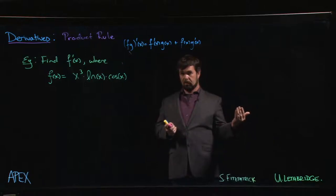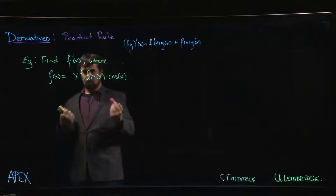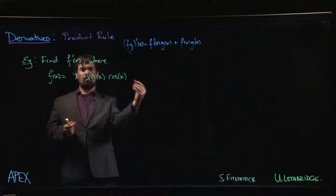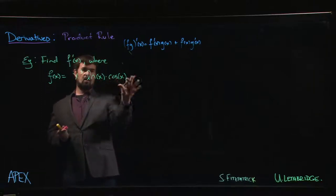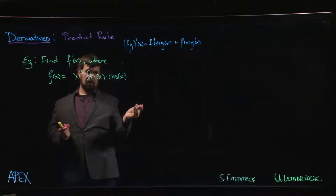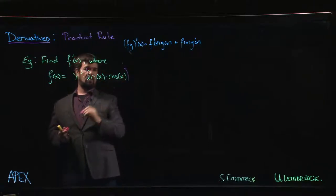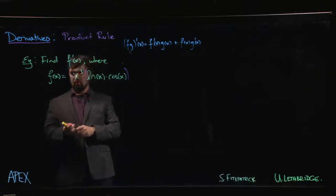We know that multiplication satisfies the associative property—we're allowed to group, and grouping does not affect the outcome. That's what the associative property tells us. So in particular, we could choose to group the x cubed with the log x together, or we could choose to group the log x with the cos x together. Maybe we group this way: group the natural log with the cosine, leave the x cubed out front.